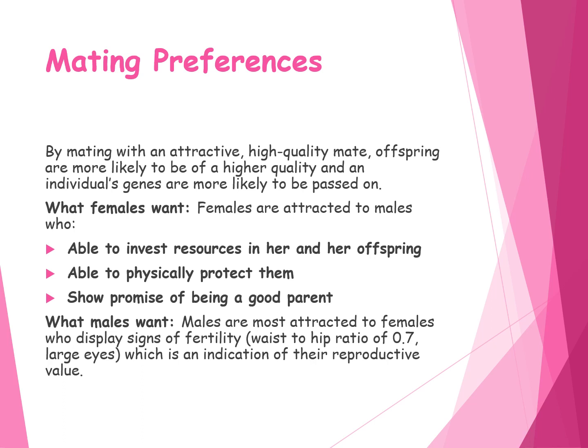Females are more attracted to males who will be able to invest resources into her and her offspring. Since women don't have the same reproductive potential as men, when she does reproduce she wants to make sure that offspring will survive with all the resources it needs to grow up and pass on their genes. Equally, they would want a man who can protect them and their offspring — so wider shoulders and a narrower hip, showing strength. They would also want a man who shows good parenting skills to invest time in that child.